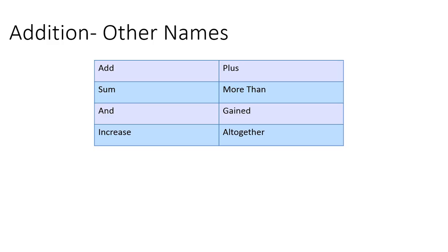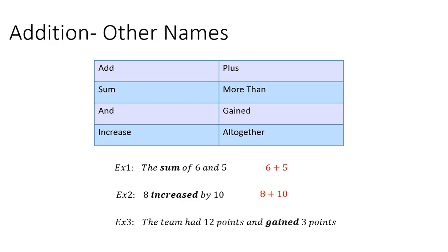So let's look at an example and how we would write it numerically. Example 1, the sum of 6 and 5. What that means is that you are going to add 6 and 5. Example 2, 8 increased by 10. So that means you are going to add 8 and 10.